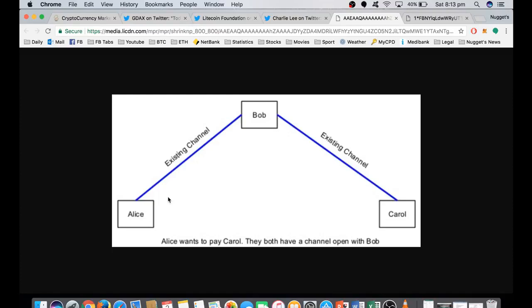But what it also allows for is creating channels further down the line. So even though Alice and Carol might not know each other, if they both know Bob and have a channel open, Alice can pay Carol instantly with zero fees. And obviously, as this network grows, you can pay further and further on down the line.